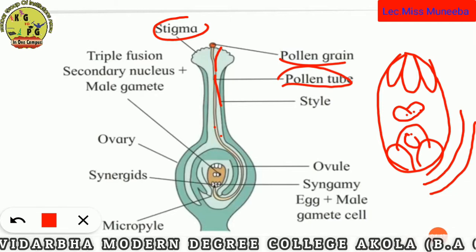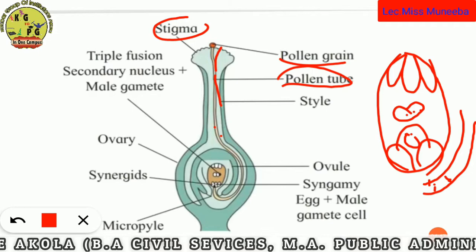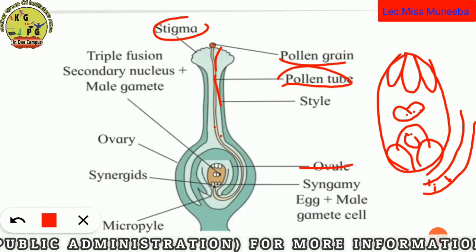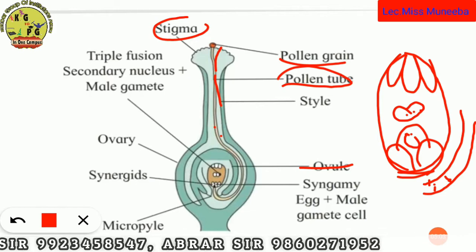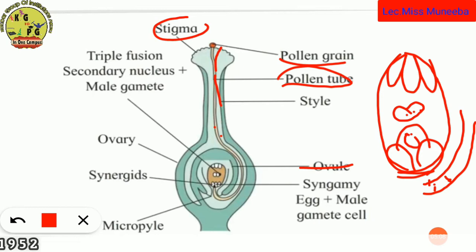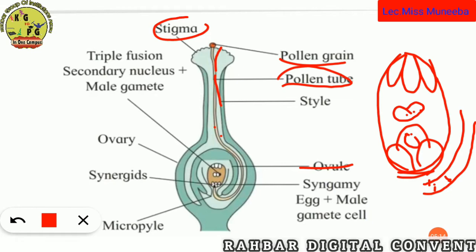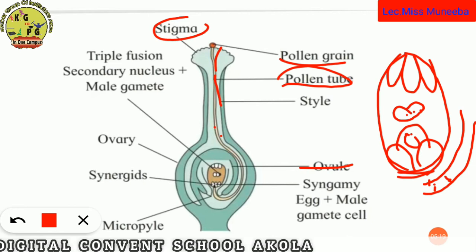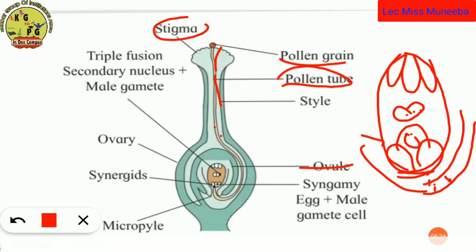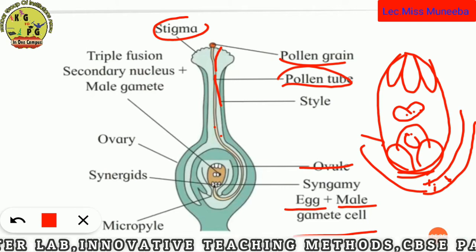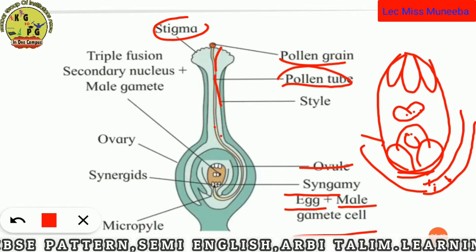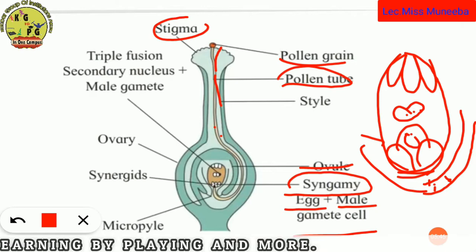The pollen tube inserts into the embryo sac. There are two male gametes inside. The synergid cells help by releasing water, which ruptures the wall. The first male gamete then fuses with the egg cell. This process is called Syngamy.